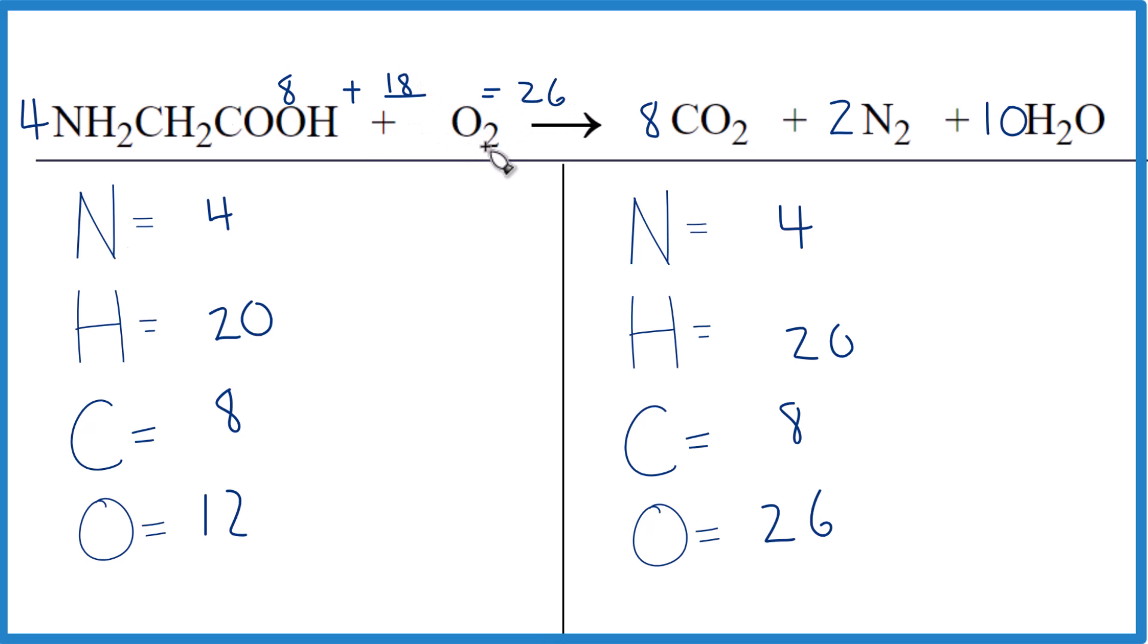We can't put 18 here because we have to multiply it times two. So let's put nine here and I'm going to get rid of this up here. So it's a little cleaner. So now we'll update our oxygens. We had four times the two, that's eight plus 18, that equals 26.